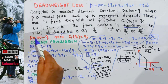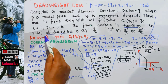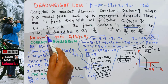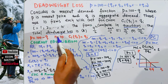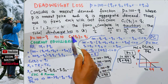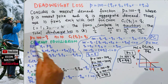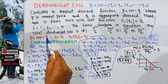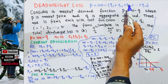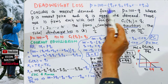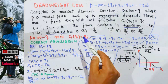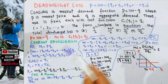We are given the inverse demand function P = 100 - Q, where Q is the aggregate output of all 10 firms, since n = 10. The cost function is C_i(Q_i) = Q_i. Since Q = Q1 + Q2 + ... + Q10, we can write the inverse demand as P = 100 - (Q1 + Q2 + ... + Q10). This is our inverse demand function.